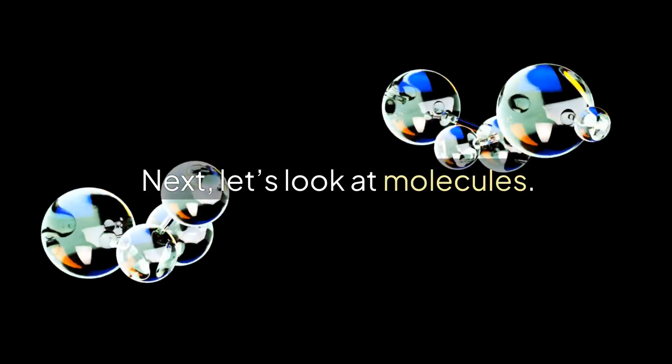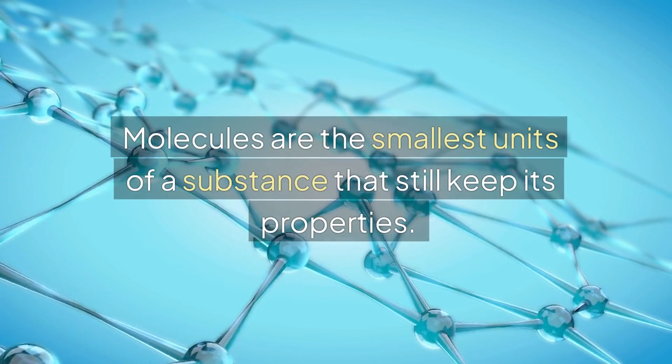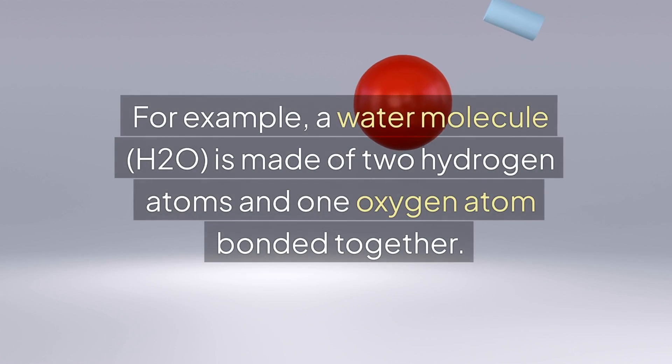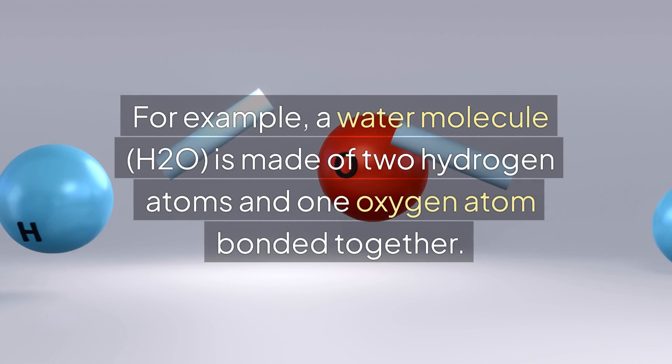Next, let's look at molecules. Molecules are the smallest units of a substance that still keep its properties. For example, a water molecule, H2O, is made of two hydrogen atoms and one oxygen atom bonded together.